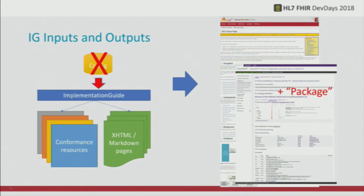A couple of changes are happening to the tool suite very soon. We currently have a configuration file that drives the HL7 implementation guide publishing process, and in addition to producing the HTML rendered view, we will also be producing a package of computable content. More importantly, it's something you can put in a package management system so that implementation guides can more easily depend on other implementation guides. You'll simply specify the canonical URL and the version you're dependent on, and it will go off and find that wherever it is.